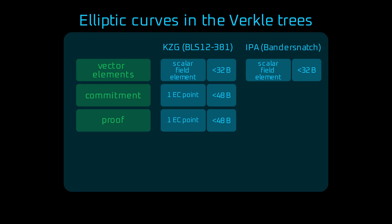KZG uses 48-byte elliptic curve points for both commitment and the proof. IPA, in contrast, uses smaller elliptic curve points, just up to 32 bytes each. And the proof includes two log of vector size of them.